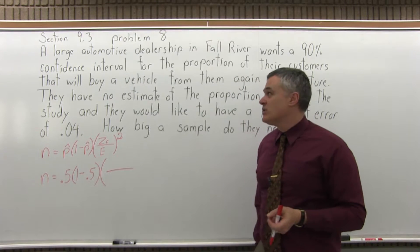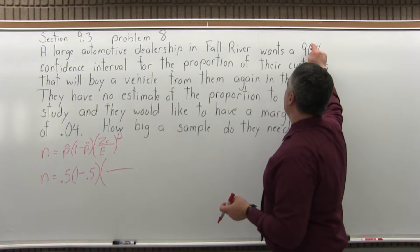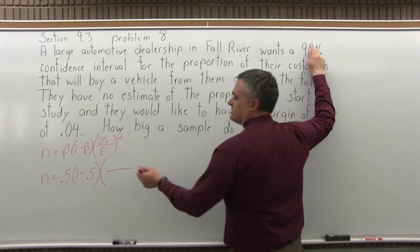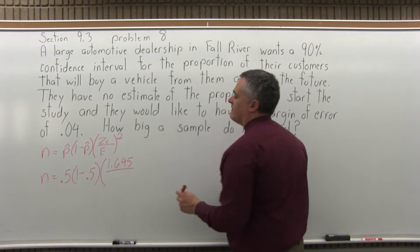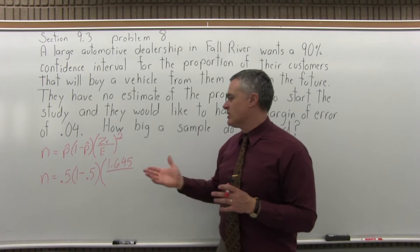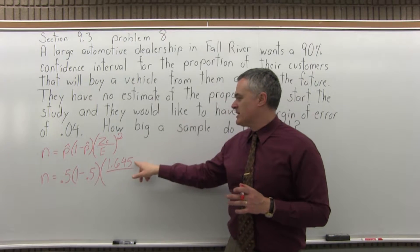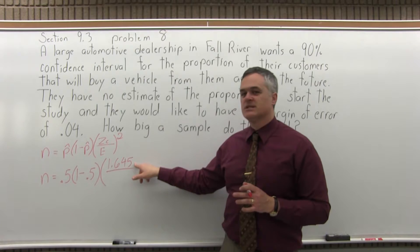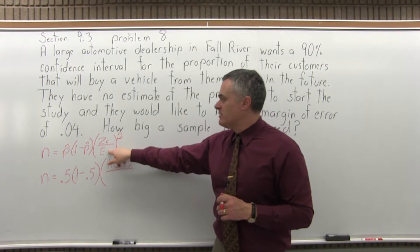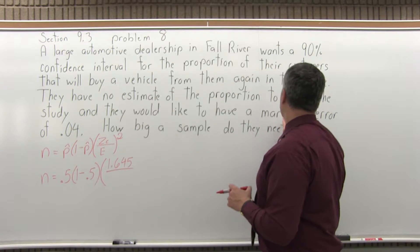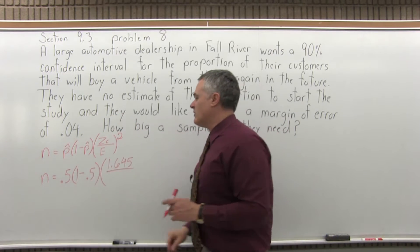z sub c is the confidence coefficient and for 90% confidence, which is what they tell us to use in this problem, the confidence coefficient would be 1.645. There's a little chart for that in the notes and you can look it up. The E in the denominator is given in the question as .04. They would like to have a margin of error of .04.